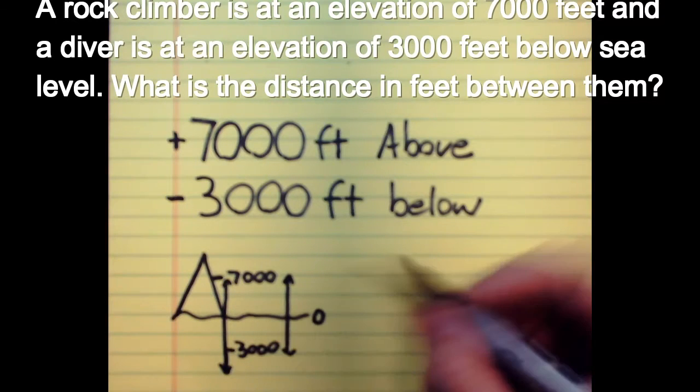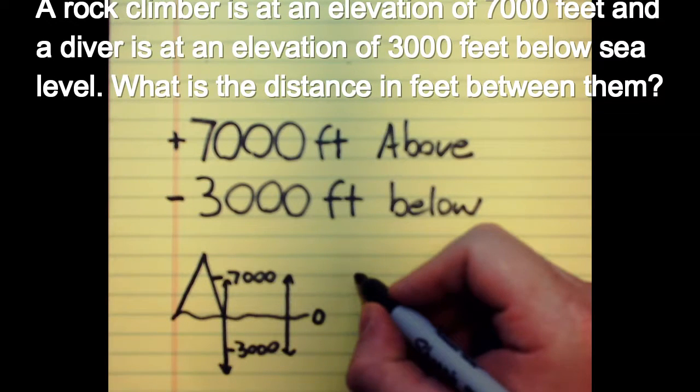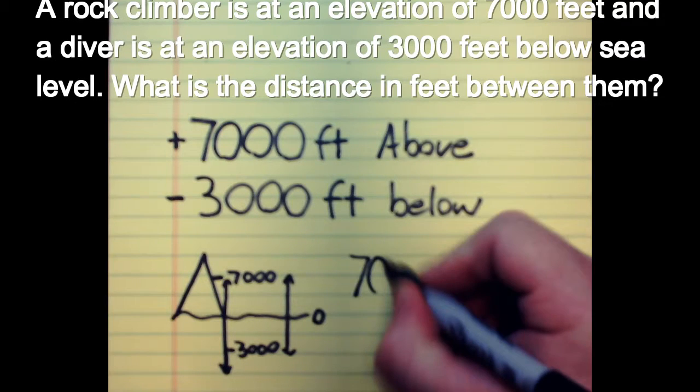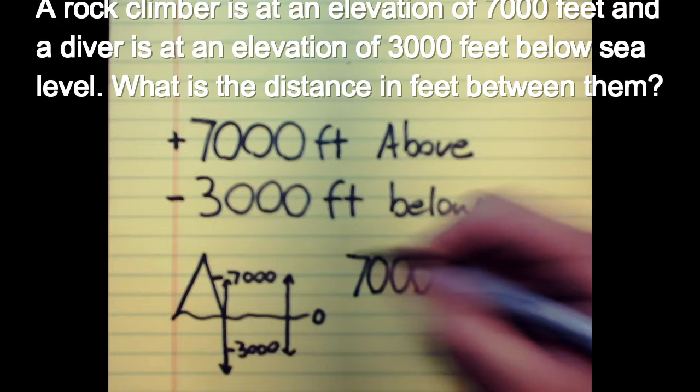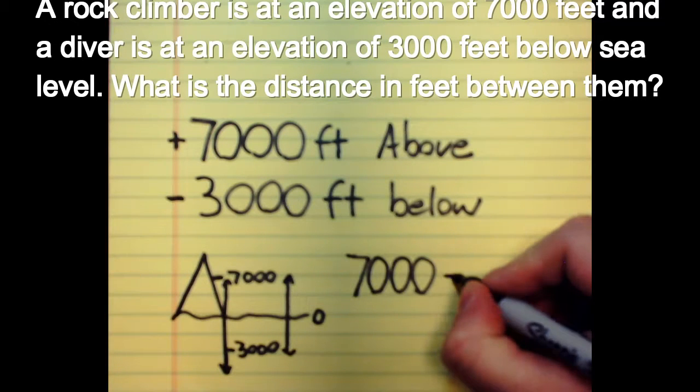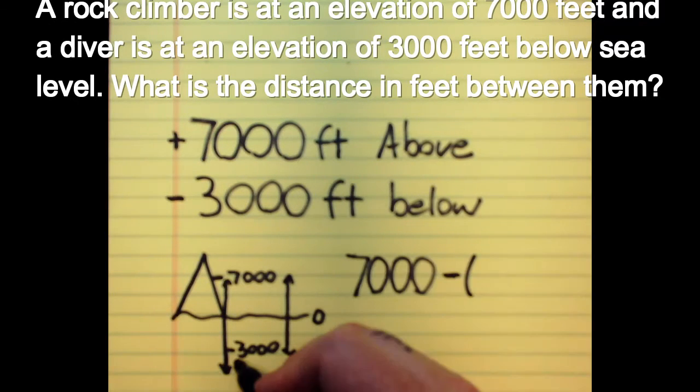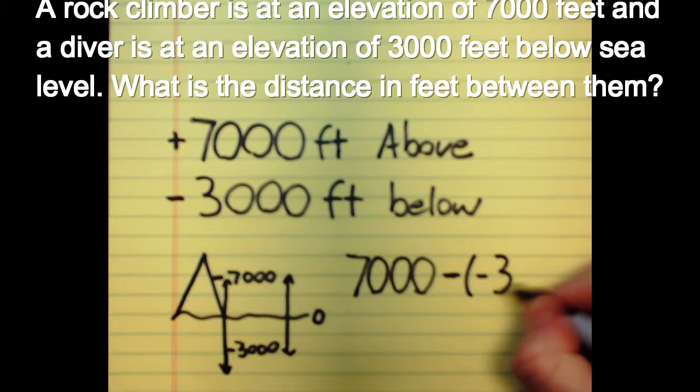So one way to do this is you start with your 7,000, and then we are going to find the difference, which means we subtract, but we are subtracting a negative 3,000.